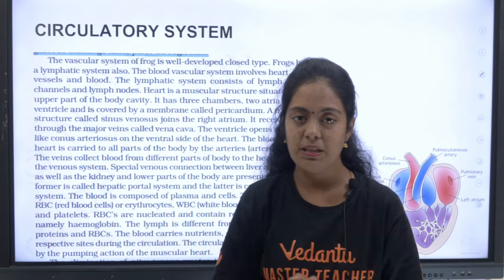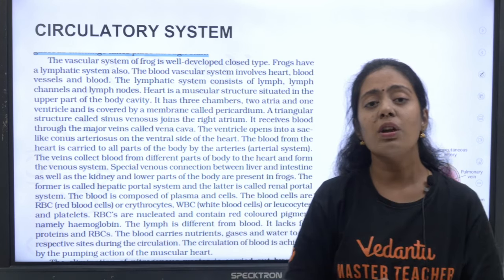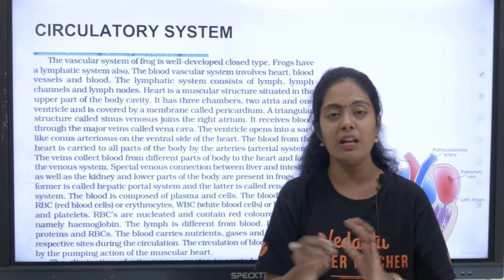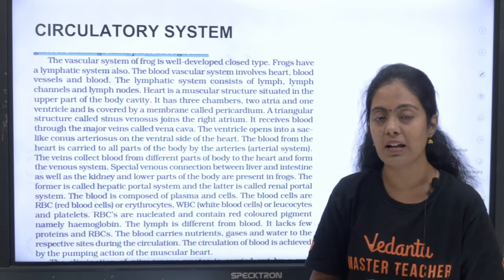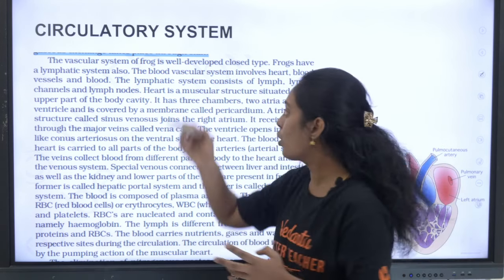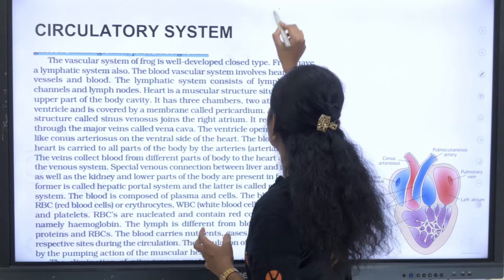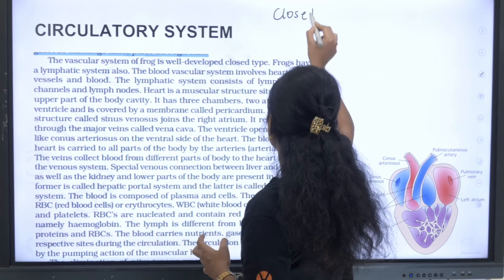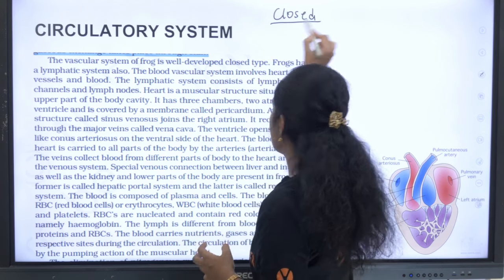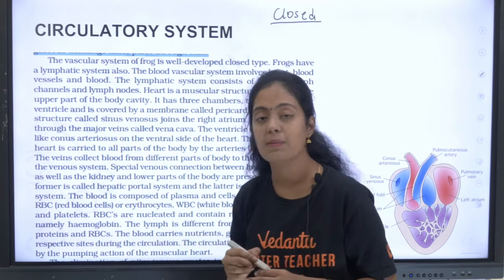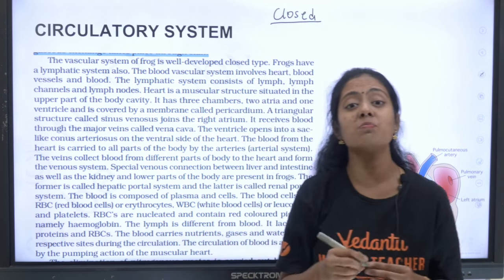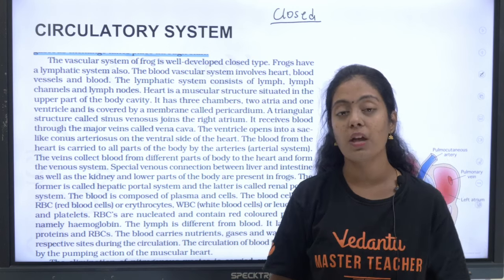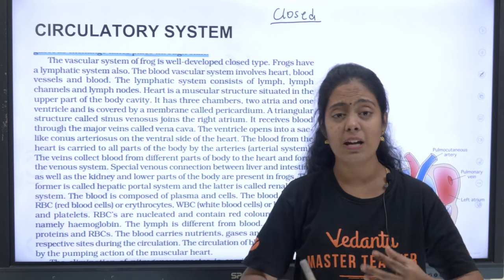Circulatory system: the frog has a closed type circulatory system — blood is pumped into blood vessels. It is a well-developed, closed type vascular system. They also have a lymphatic system.